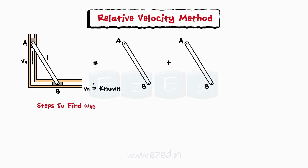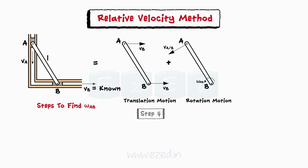Step 3: Divide the motion of the body as a sum of translation and rotation motion. Translate the body with translating velocity VB and rotate it about a fixed point B. Step 4: Write the relation for the relative linear velocity of a translating point. For point A, we will write the relation as shown.